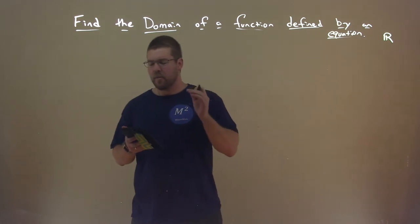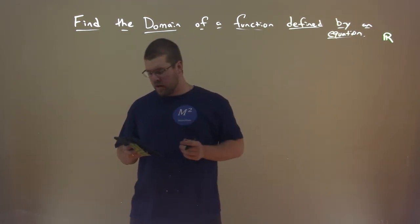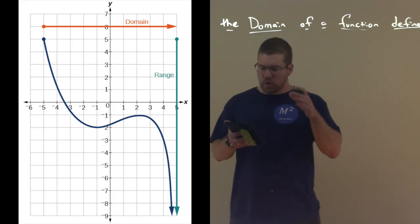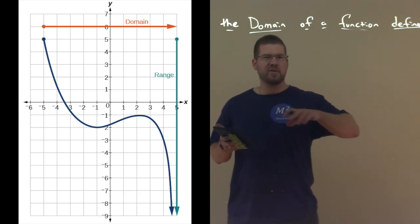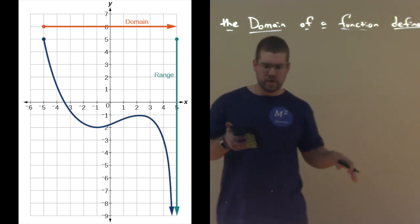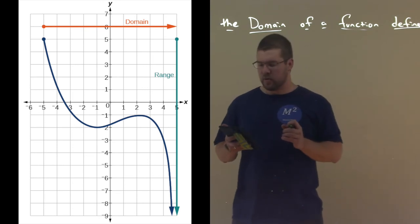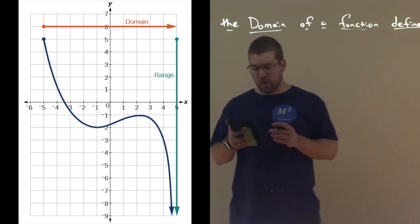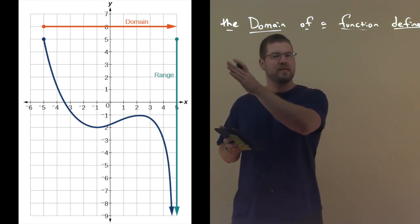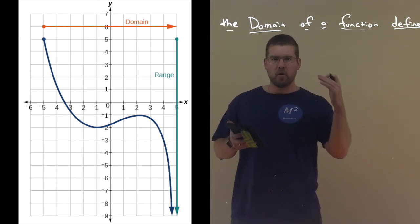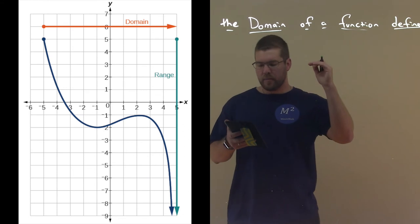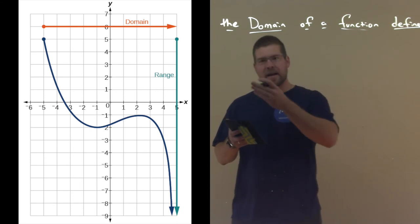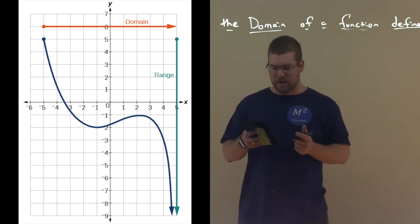For this next part, we're going to talk about domain and range from graphs. Let's look at this first graph — the blue line looks like a cubic function with a closed dot in the upper left-hand corner. It curves down to the right and goes on forever. The domain starts at negative 5 with that closed dot and goes to positive infinity; the range starts at the highest value of 5 and goes down to negative infinity.